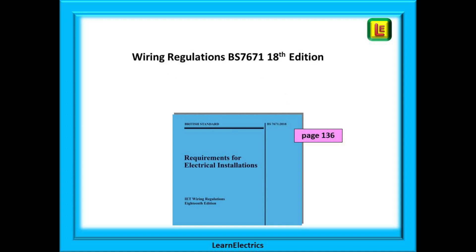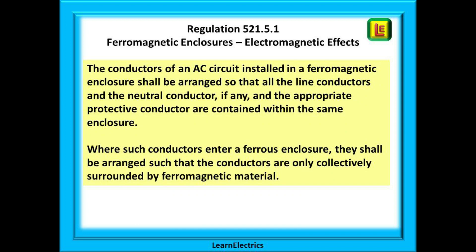If we look in the wiring regs BS 7671 18th edition page 136, we will find regulation 521.5.1 titled Ferromagnetic Enclosures electromagnetic effects. This regulation tells us the conductors of an AC circuit installed in a ferromagnetic enclosure shall be arranged so that all the line conductors and the neutral conductor if any and the appropriate protective conductor are contained within the same enclosure.